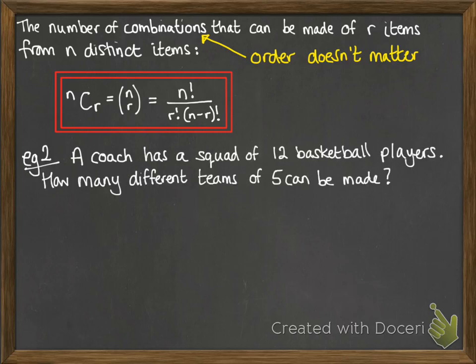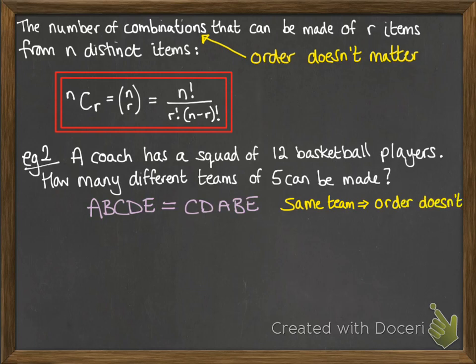A coach has a squad of 12 basketball players and needs to pick a team of 5. How many different teams of 5 could be put together? The order is not important because if we picked persons A, B, C, D, E, those five would be the same if we put them in a different order.